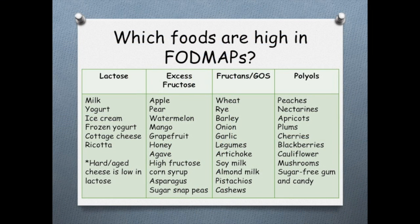FODMAPs are found in a variety of foods, even some healthy fruits and vegetables. Here's a look at some of the foods that are highest in each of the FODMAP groups. This chart is not meant to be a complete list but rather to provide a general overview of the main sources of FODMAPs. Lactose is a sugar found in milk and is high in certain dairy products. Excess fructose is found mainly in fruits like apples and some sweeteners like honey and high fructose corn syrup. The main sources of fructans and GOS are wheat, onion, garlic, and legumes. Lastly, polyols are in pitted fruits like peaches, as well as some vegetables and sugar-free gum and candy.